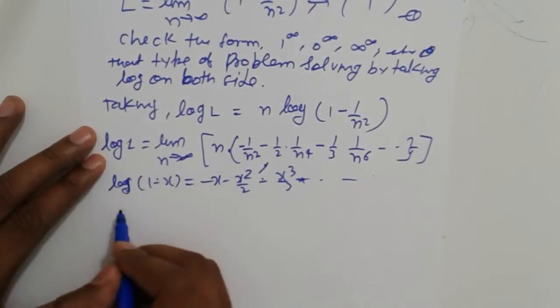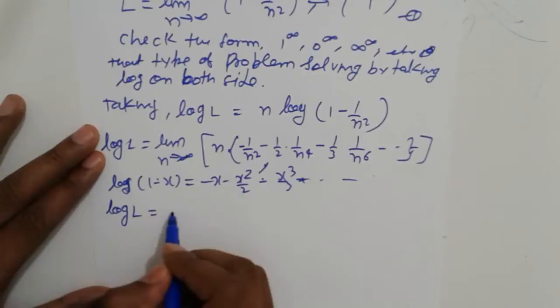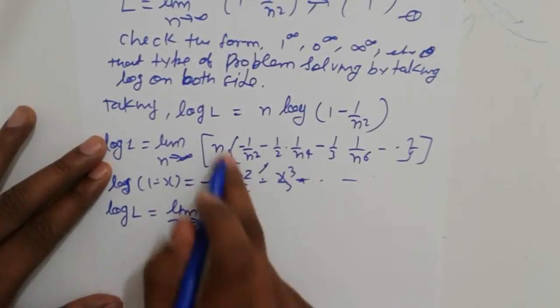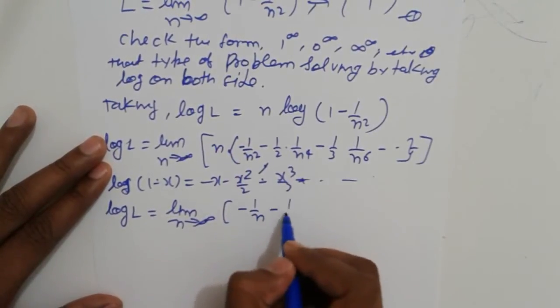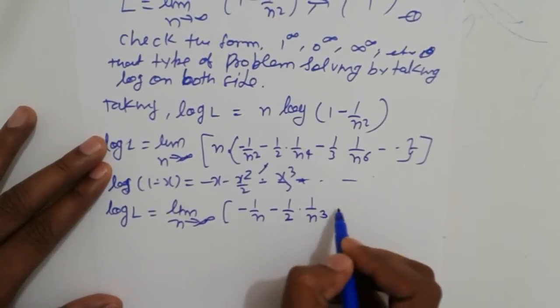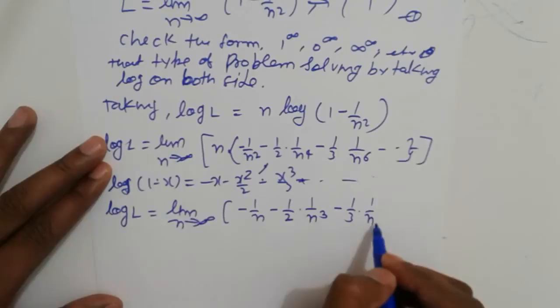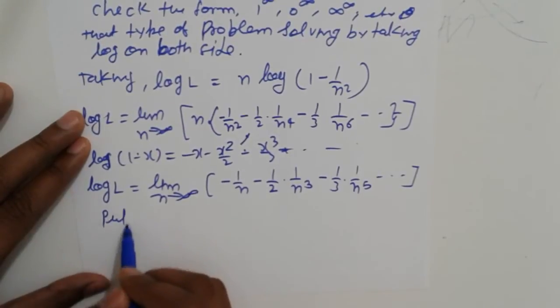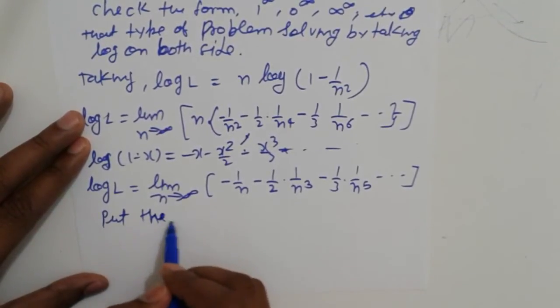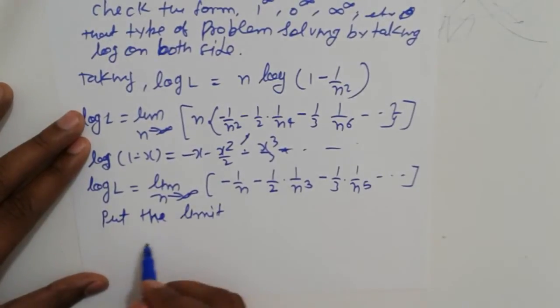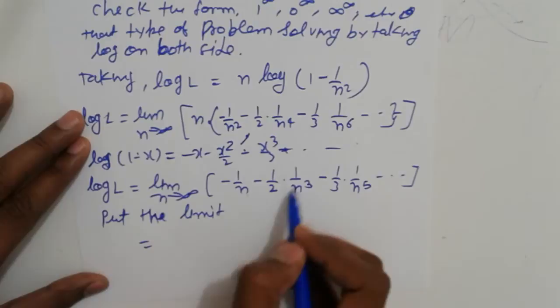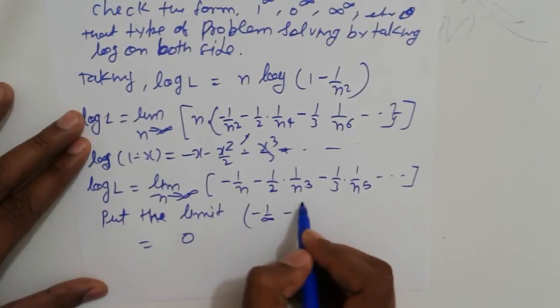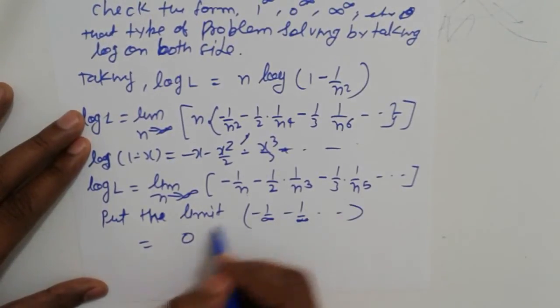Multiply by n, we get log L equals limit n tending to infinity: -1/n - (1/2)(1/n³) - (1/3)(1/n⁵) and so on. Now put the limits. We get 1/infinity minus 1/infinity, so that case we get 0.